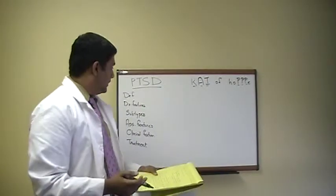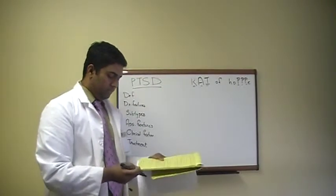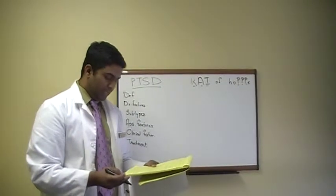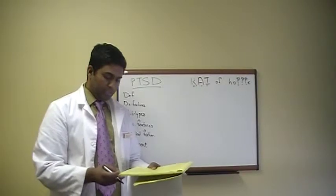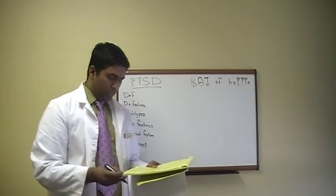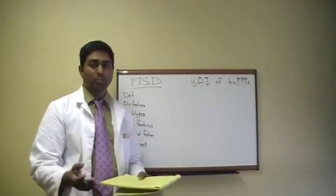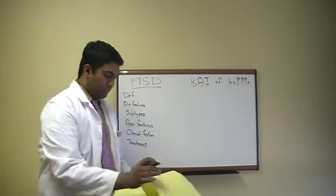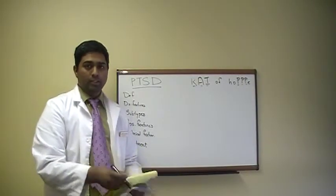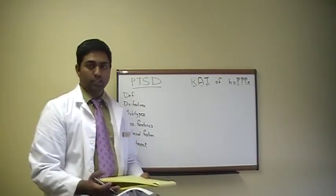The diagnostic features are symptoms that are following a threatening event that the DSM-IV describes as intense fear, horror, or helplessness that has to last more than one month. If it is less than a month, it's called acute stress disorder.